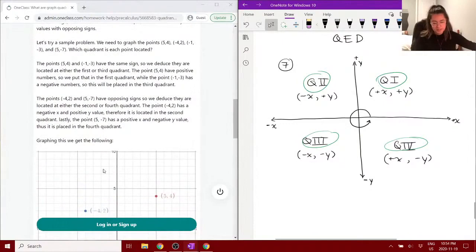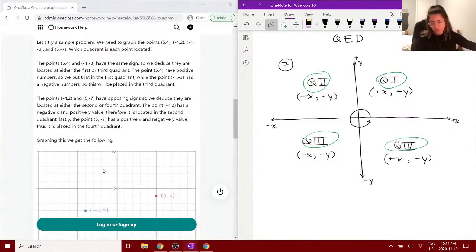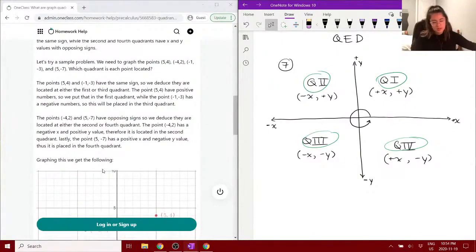So, this one says here that we are going to try a sample problem. So, if we need to graph the points, 5, 4, so we have 5, 4, well, that's an x value, that's a y value, remember?